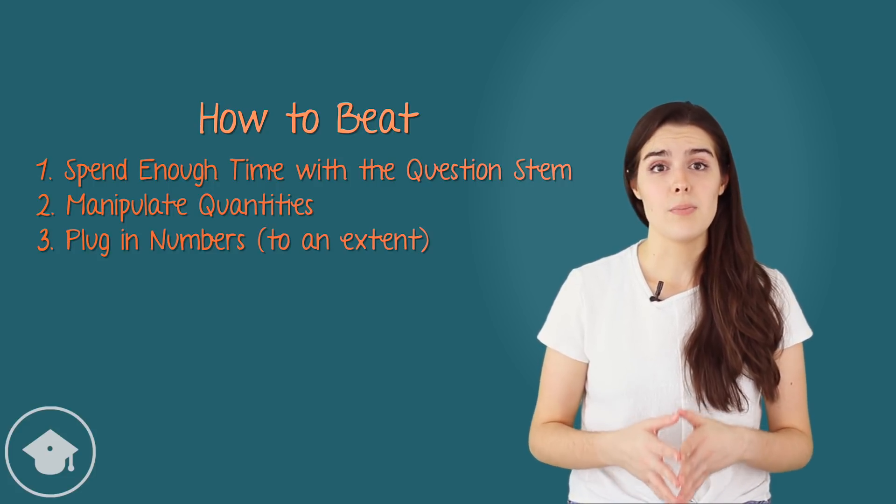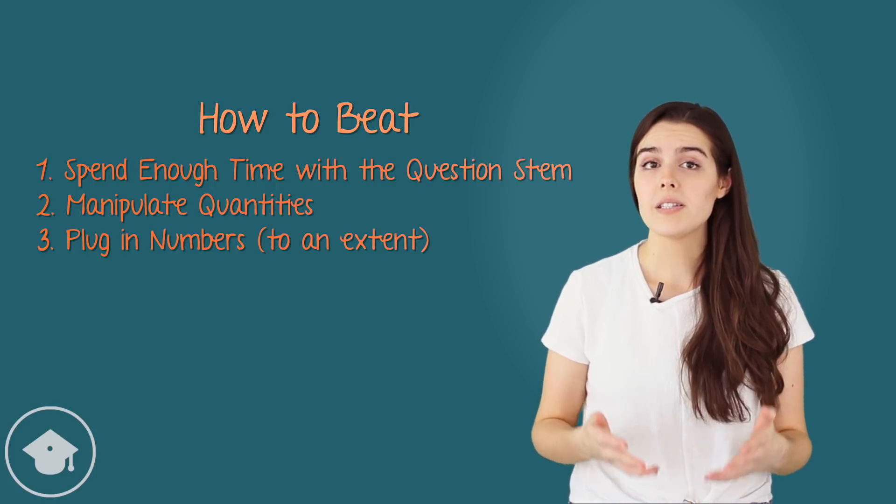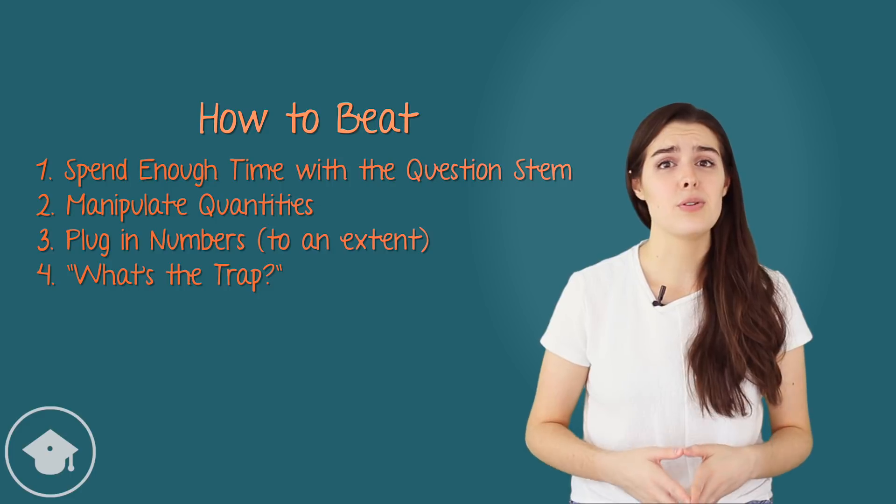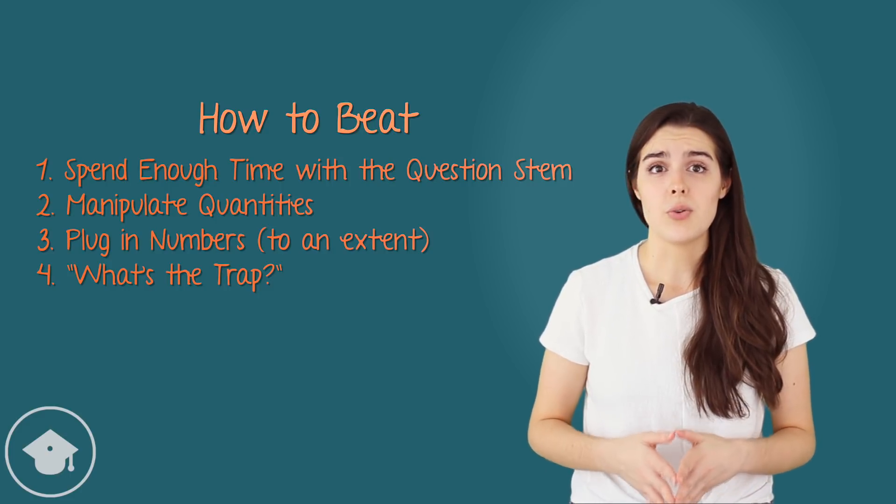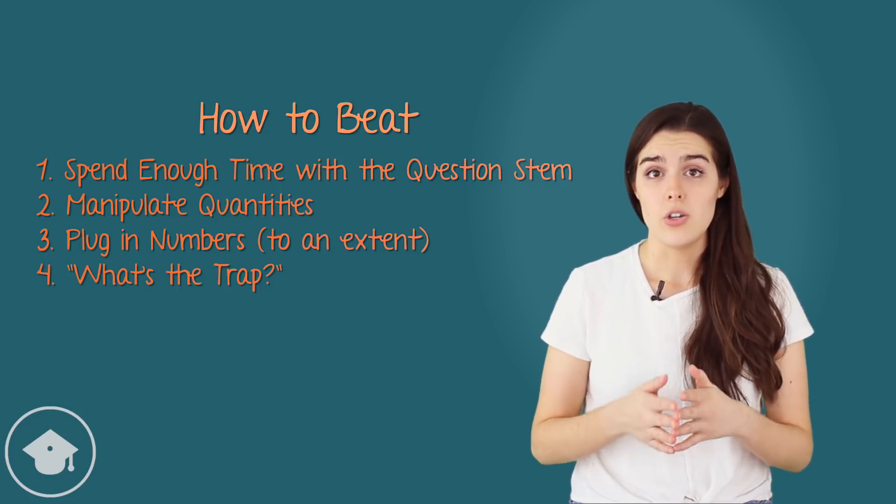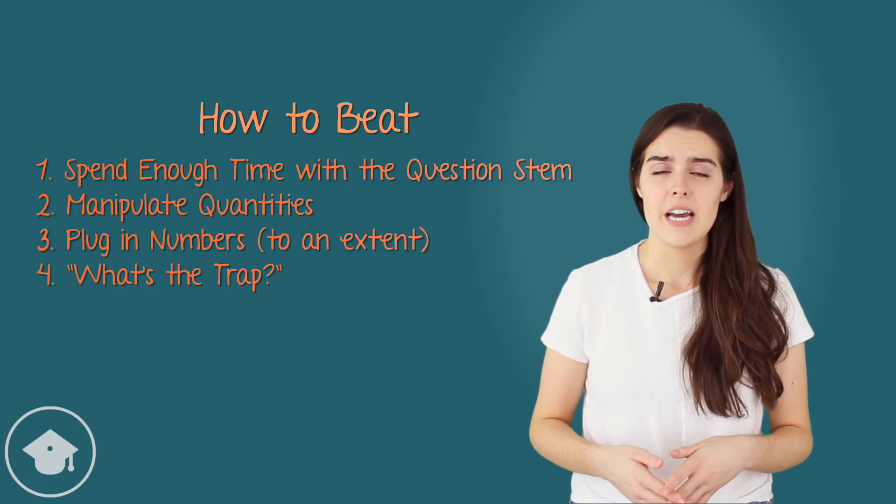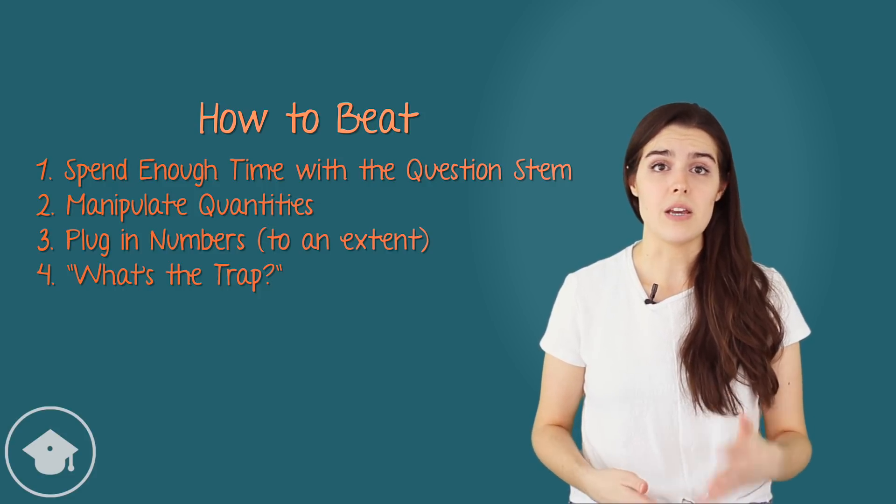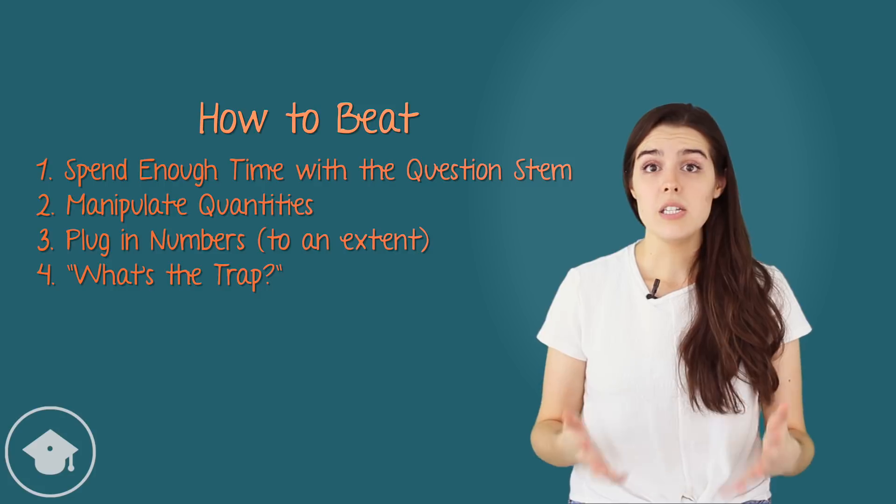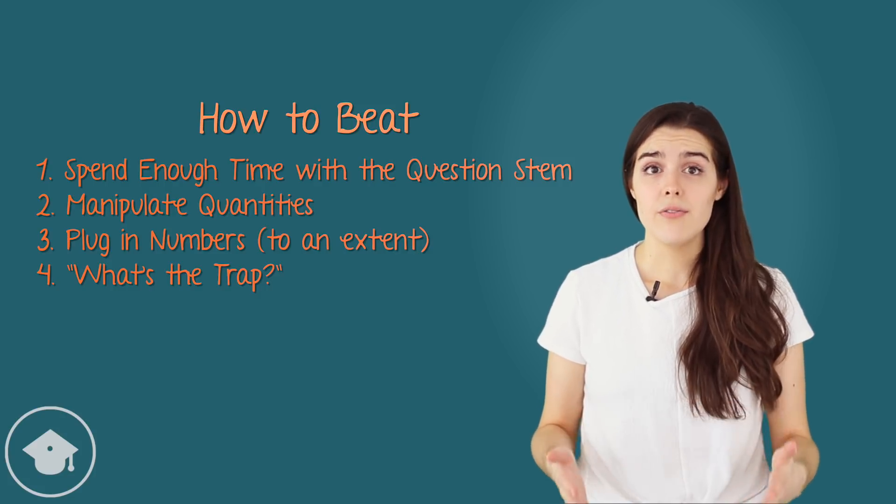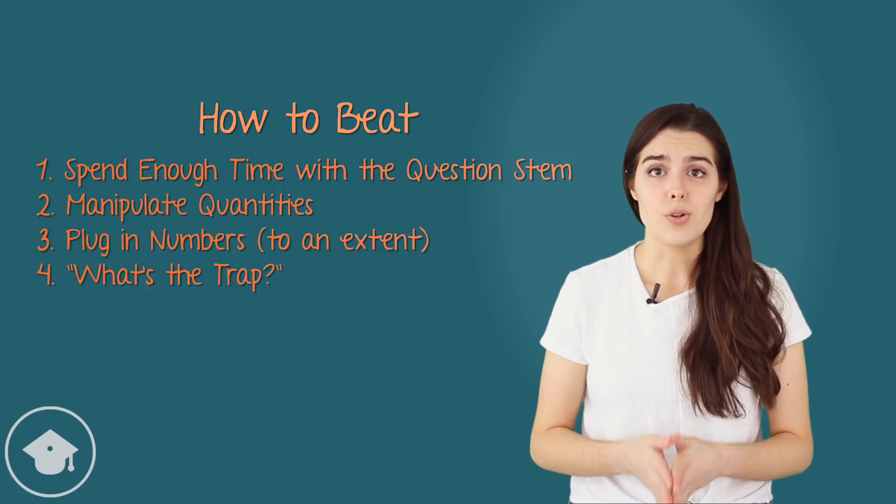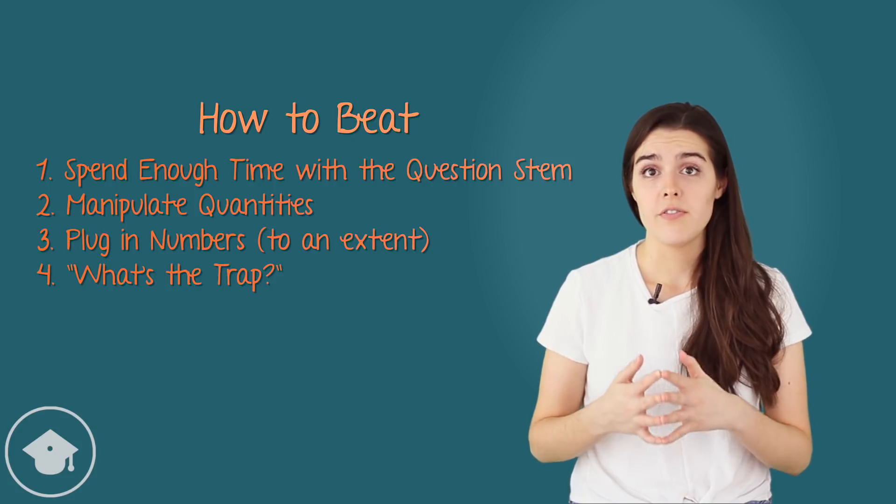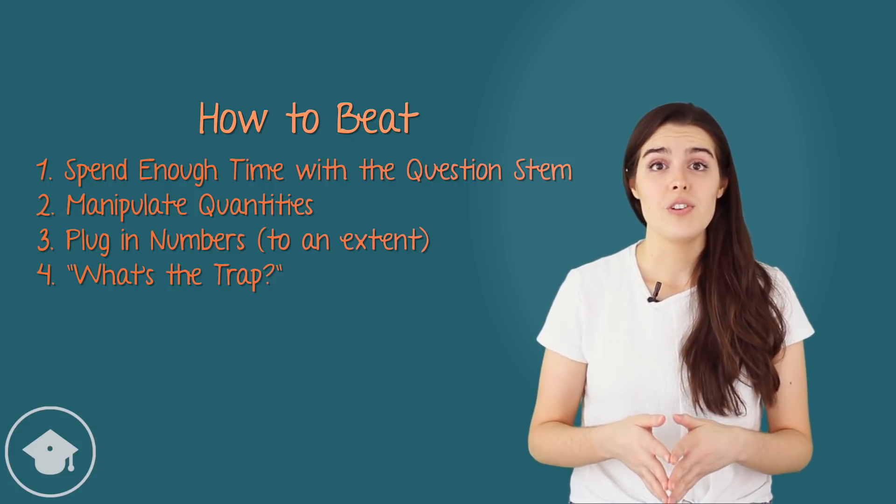The fourth step in beating quantitative comparison questions is asking, what's the trap on every question? There are too few questions on this test to waste any on simple, straightforward calculation. Each problem is going to have something more to it that you'll need to identify in order to solve. Now, for quantitative comparison, this is mainly because of answer choice D. The relationship cannot be determined from the information given. This means that if A is greater than B in every single case except one, the answer will be D, not A. Our job is to either find that one case, or prove it doesn't exist.